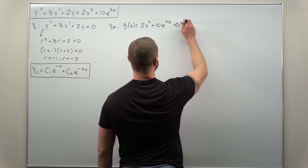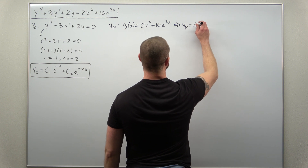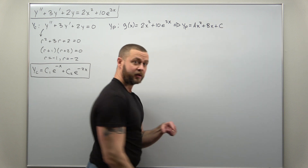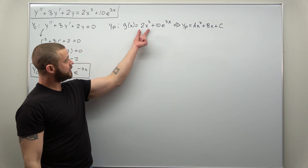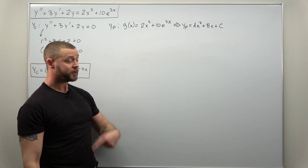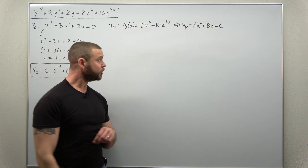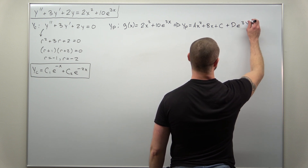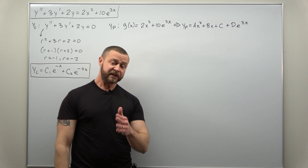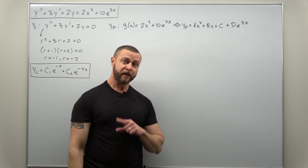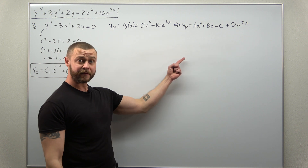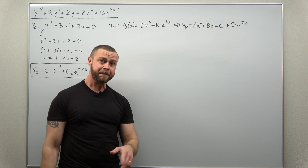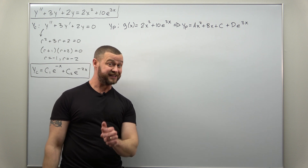Our choice for the particular solution is: we're going to try ax squared plus bx plus c — that's the degree two polynomial corresponding to the term 2x squared — and we're going to add to that a general exponential function with a constant d in front, times e to the 3x. That's the only new part to this problem.